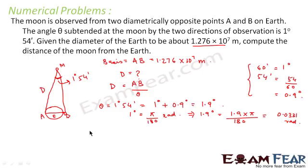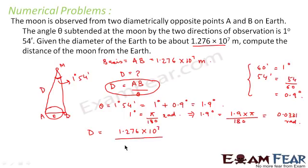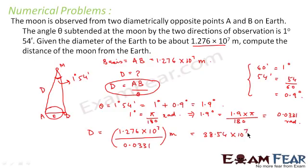Now we substitute the values of AB and θ into the equation: D = 1.276×10⁷ ÷ 0.0331 = 38.54×10⁷ meters. This is the distance of the moon from the Earth.